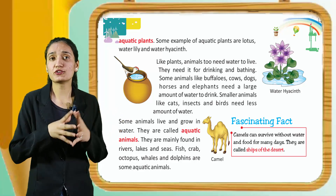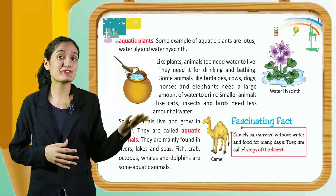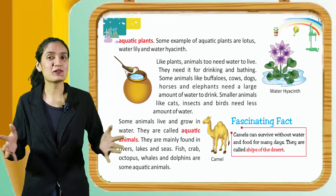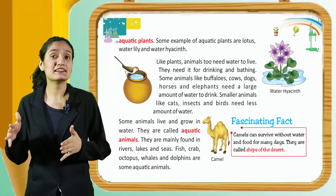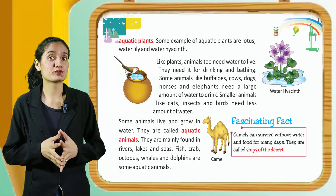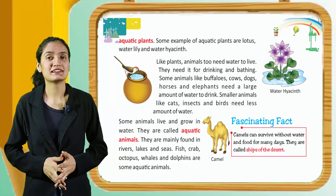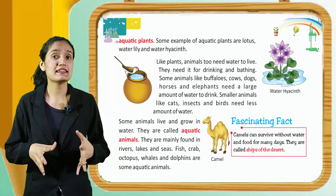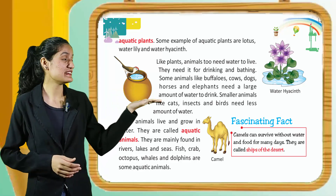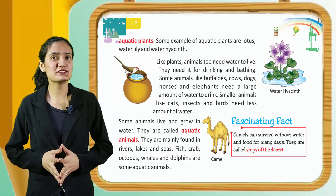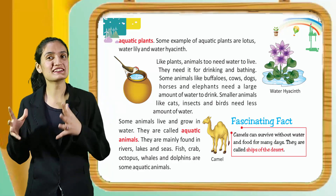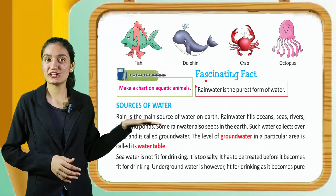Animals too need water to live. They need it for drinking and bathing. Some animals like buffaloes, cows, dogs, horses, and elephants need a large amount of water. Smaller animals like cats, insects, and birds need less water. Some animals live and grow in water — they are called aquatic animals, mainly found in rivers, lakes, and seas. Fish, crabs, octopus, whales, and dolphins are some aquatic animals. Fascinating fact: camels can survive without water and food for many days — they are called ships of the desert.